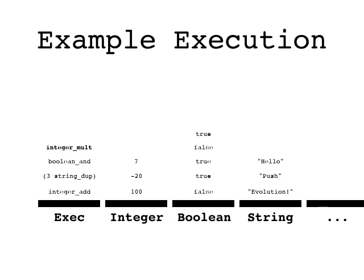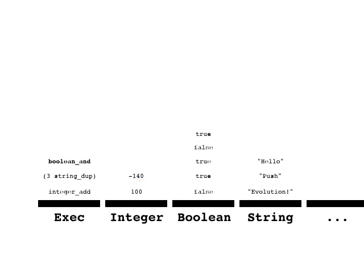Here's how it works from the state we saw previously. First, integer mult is popped and processed, which causes the top two integers to be popped and multiplied and their result pushed back onto the integer stack. Next, boolean and is popped and processed, which pops the top two boolean values and pushes the result of anding them together — true and false is false. Next, we have a code block, which is unwrapped and its contents are pushed individually back onto the exec stack. Then three is pushed onto the integer stack. Then string dupe pops and then pushes two copies of the string on top of the string stack. Then integer add pops the top two integers and pushes their sum. And then the exec stack is empty, so it stops.